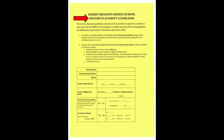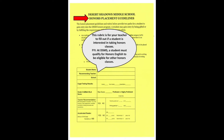On the back of the registration card, you will find information about honors classes and our rubric for admittance into honors classes. For students interested in pursuing honors classes at DSMS, your 6th grade teacher will need to fill out this rubric for you. At Desert Shadows, students must qualify for honors English in order to take honors social studies and/or honors science. Your math placement will be based on skill level and concepts mastered.